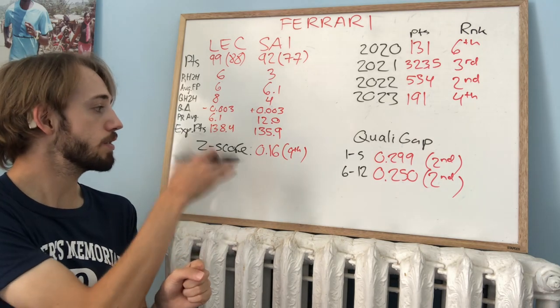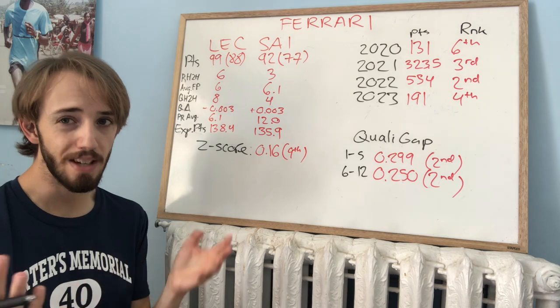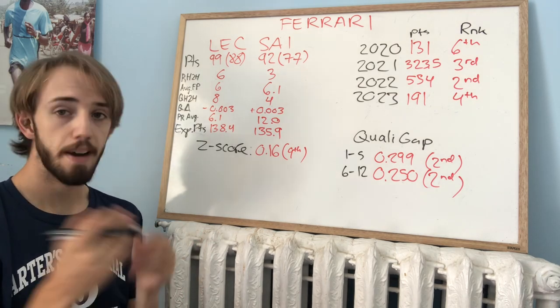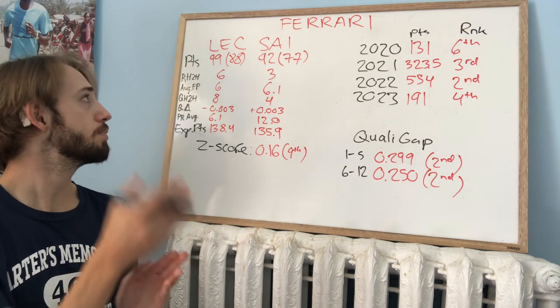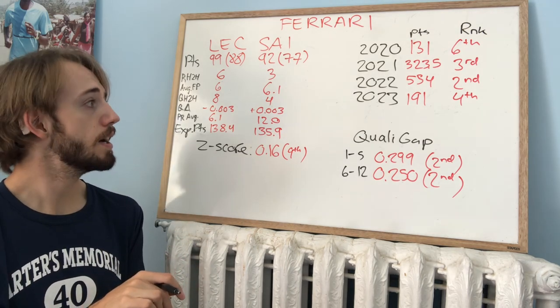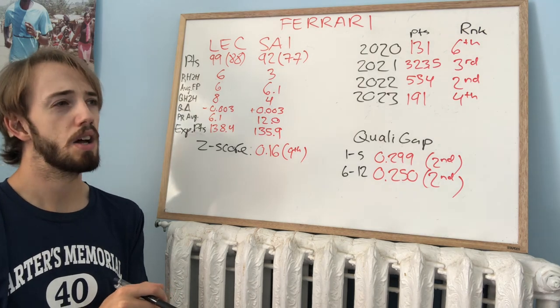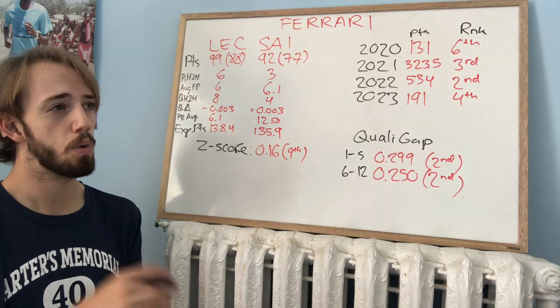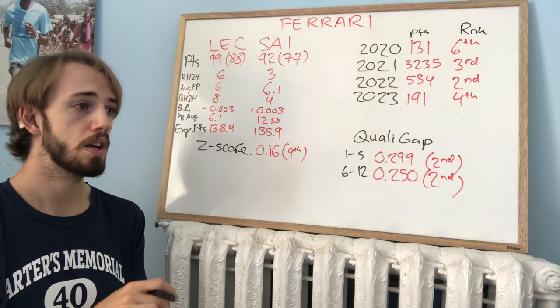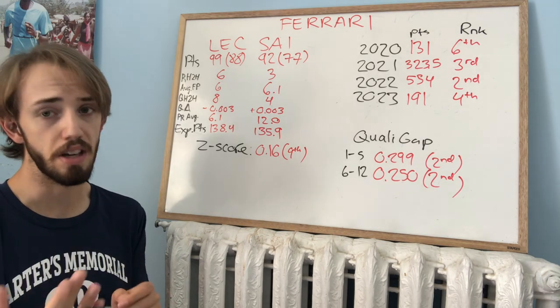Looking at Z-score, 0.16. Ninth biggest, so second smallest effectively. Gap between teammates in the races, from my race model. So pretty close between Leclerc and Sainz. I do think that for Sainz, he is a little bit better in qualifying than the race the last couple years. But that being said, the data does suggest that they are very close with the slight edge to Leclerc.